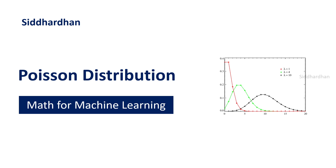Hello everyone, I am Siddhartha. Currently in our machine learning course we are discussing probability for machine learning, and in today's video we are going to discuss what is meant by a Poisson distribution. This is a very important concept that we often encounter in data analysis and data science. In this video I will give you a detailed explanation on this topic. In this YouTube channel I am making a hands-on machine learning course with Python — the playlist link is in the description. With that being said, let's get started.